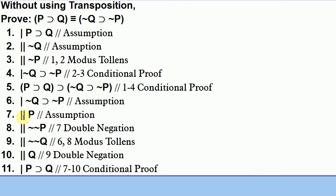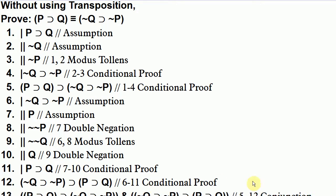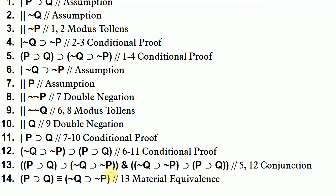We close off the conditional proof of if P then Q on line eleven, derived from conditional proof from lines seven through ten. We then close off the outer conditional proof to get: if not Q then not P implies if P then Q, from lines six through eleven. With both sides of the equivalence proved, we use conjunction to join them together, then apply the rule of material equivalence to conclude that if P then Q is equivalent to if not Q then not P.